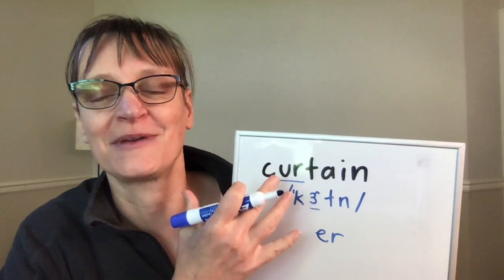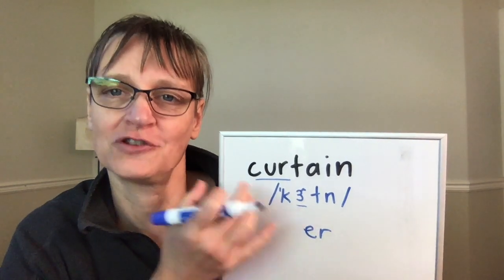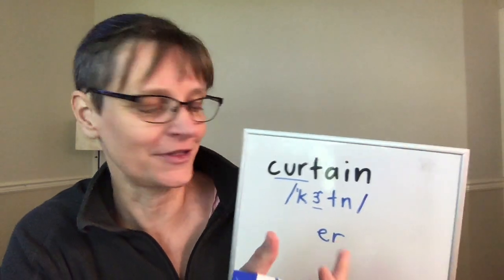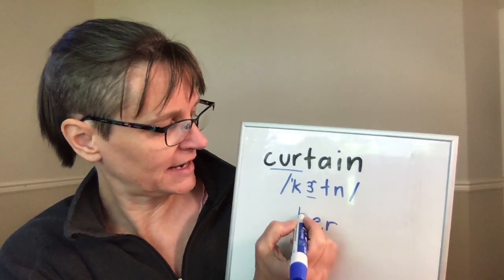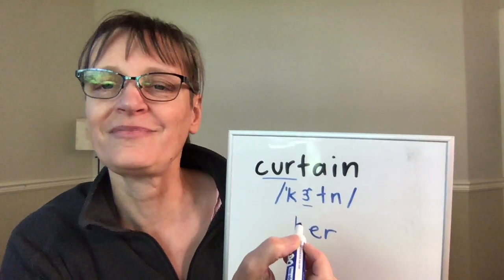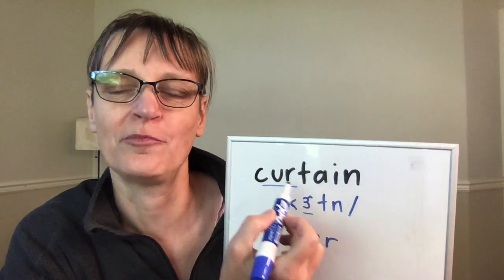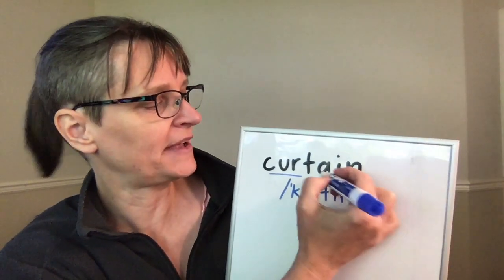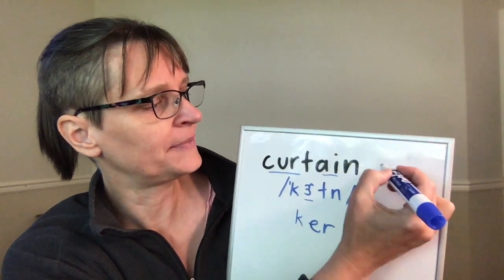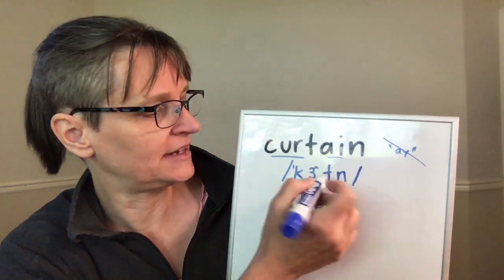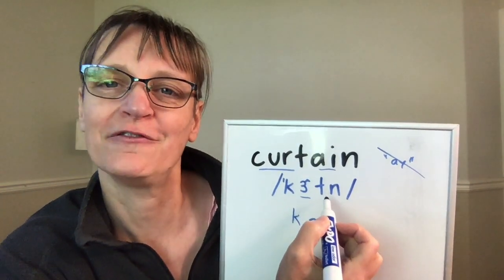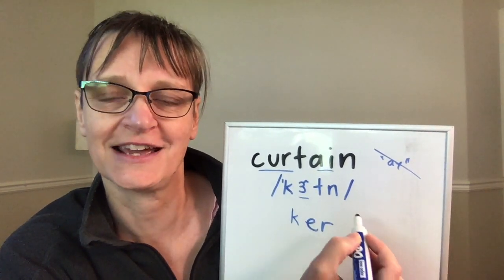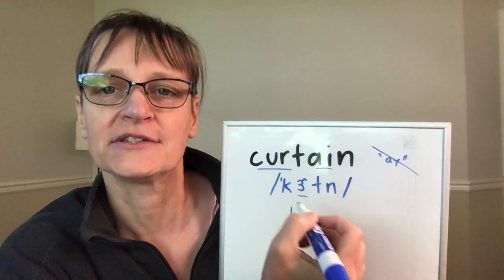There are a couple of factors that make 'curtain' difficult. First, you may have trouble with that ER sound, in which case I would recommend my American R playlist to help you with the R sound. Secondly, 'curtain' looks like it should have more of a vowel sound in the second syllable, like 'tane.' Typically when we have AI it says the vowel A, but in this case you can see in the IPA from the dictionary that there is no vowel sound — we go right from the T to the N. This is what's called a syllabic N.